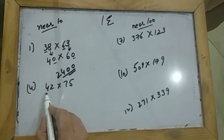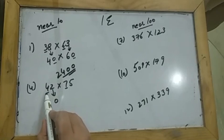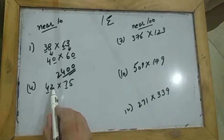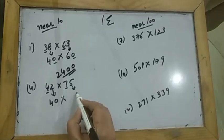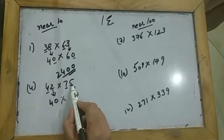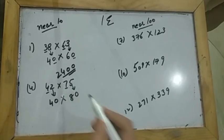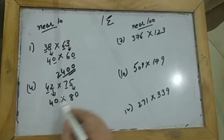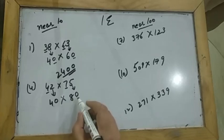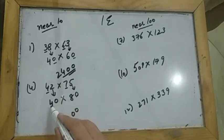Again I have to estimate to the nearest 10. This is the 10th place, so it becomes 0. To the right of 4 you have a digit less than 5, so 4 remains 4, and this becomes 0. To the right of 7 it's 5, so when you have 5, the 7 changes to 8. Now multiply — the two zeros get added in the answer and 8 fours are 32.